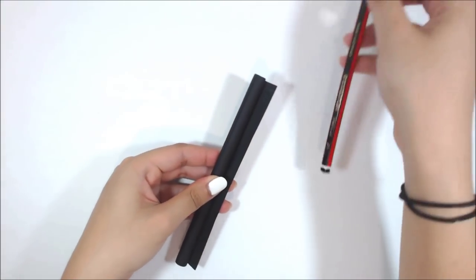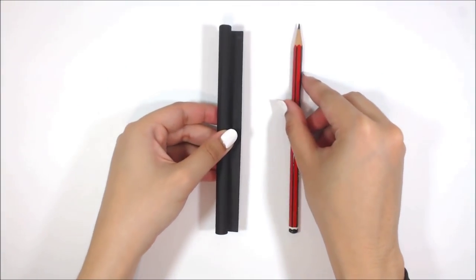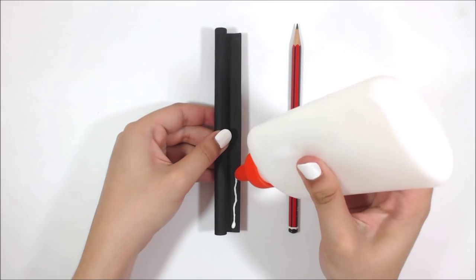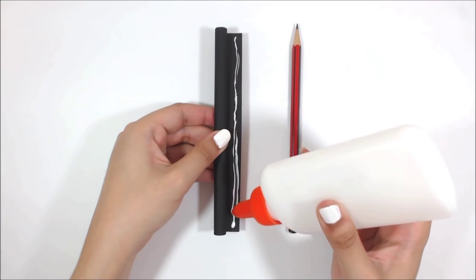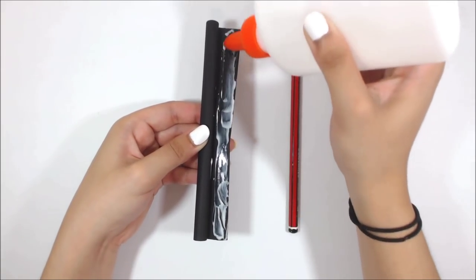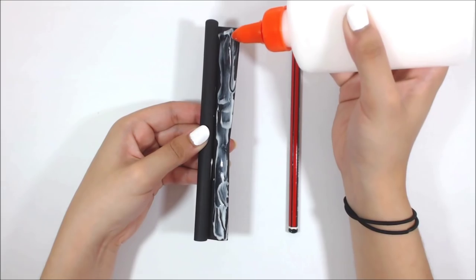Then add glue to the edge of the paper to secure the rolled paper and feel free to use any form of adhesive that is already available to you. I am using PVA glue because it's a strong adhesive and it gives it a clean finish.